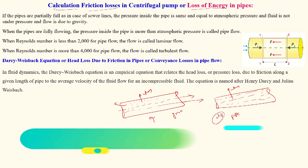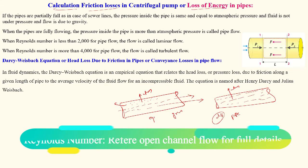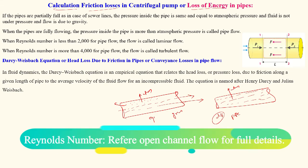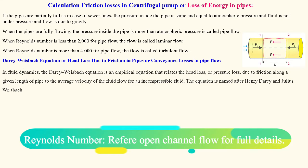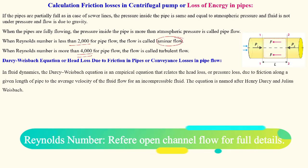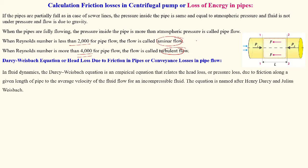Based on this concept, we can determine whether the flow is laminar or turbulent, which depends on the Reynolds number. Reynolds number is the ratio of inertial force to viscous force. In pipe flow, if the Reynolds number is less than 2000, it is laminar flow; if more than 4000, it is turbulent. Between 2000 and 4000 is the transition or intermediate zone.